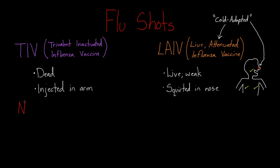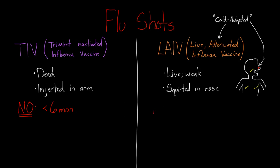Now let's think about groups that cannot get these vaccines. For TIV, the only group we'd say no to is anyone less than six months old — they should not get the TIV vaccine. For LAIV, the group is a little larger. You would say no to anyone less than two years old, or if they're over 49 years old. So a 49-year-old is okay, but a 50-year-old would not get the LAIV.